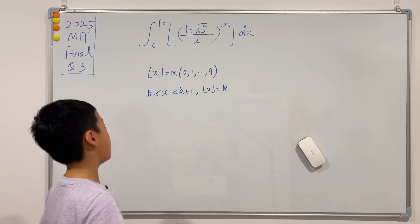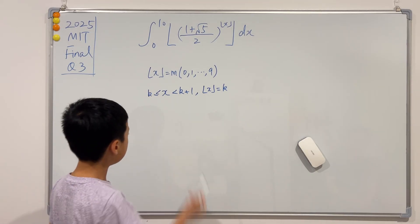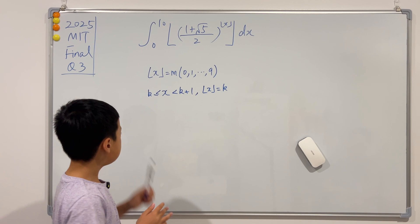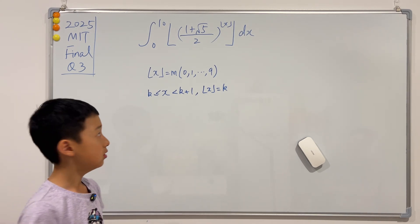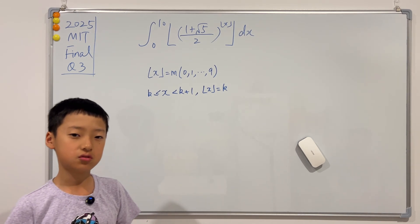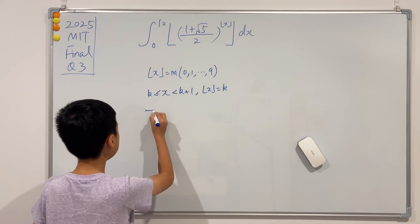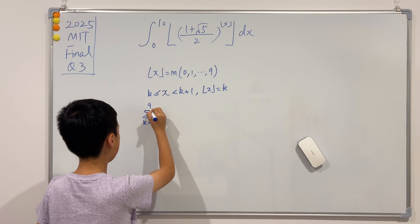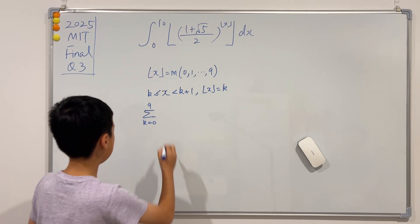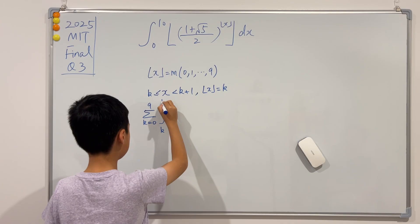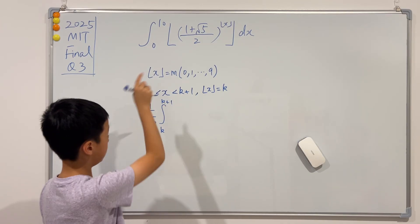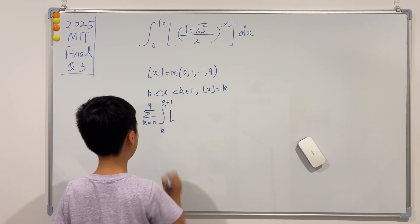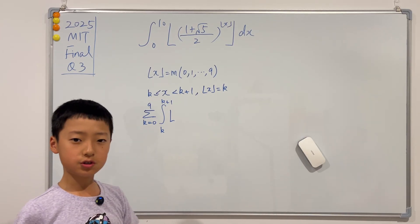But you know that we can't just change the bounds of the integral from k to k plus one, because this is only a tiny interval. So what we actually have to do is sum when k goes from 0 to 9 of the integral ranging from k to k plus one.